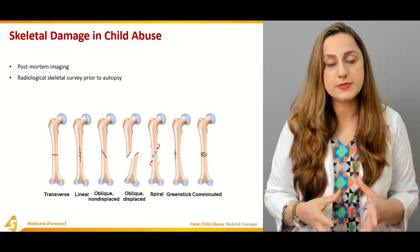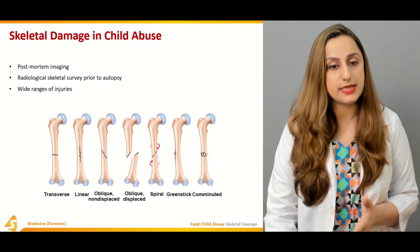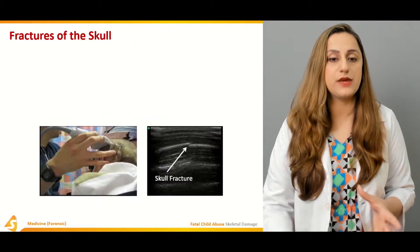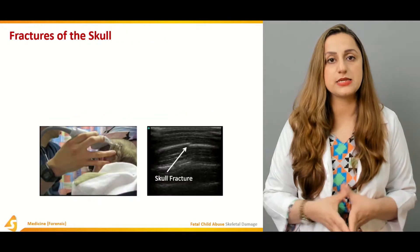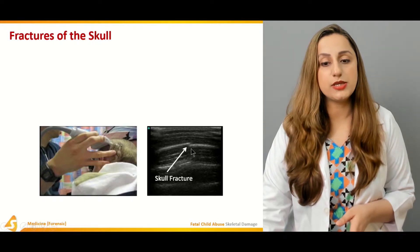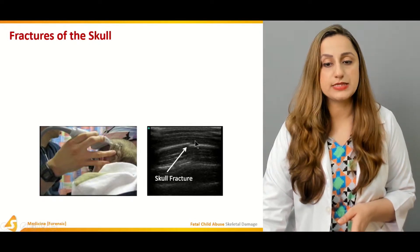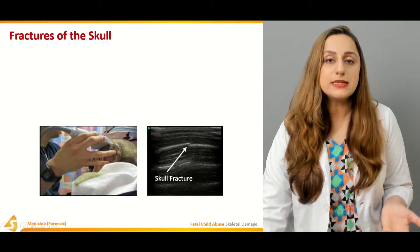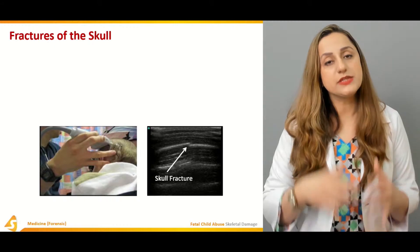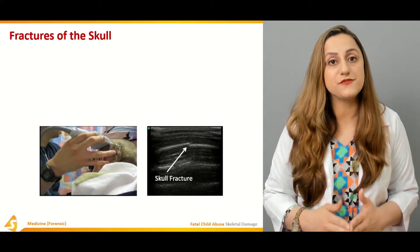Radiological skeletal survey is performed prior to the autopsy — before opening up the body, one has to carry out these radiological assays. A wide range of injuries are found on bones whenever we suspect a case of abuse. This diagram is showing a displaced fracture of the skull, and we can also have non-displaced fractures of the skull.